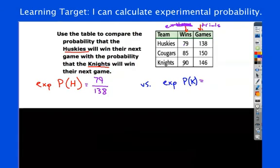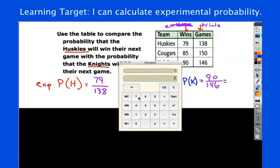For the Knights, they played 90, so 90 trials. I'm sorry, 90 of the time of the event of winning has happened out of 146 trials. And then we'll do some division. 79 divided by 138. Again, just changing a fraction to a decimal here.